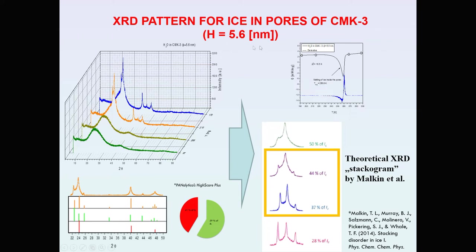Here are diffraction patterns for ice in pores of CMK3 with a pore size of 5.6 nanometers. First, we performed DSC measurements to find the melting temperature in the pore — the heat flow peak indicates the melting temperature. At temperatures lower than the melting point, we observe diffraction peaks typical for a crystal structure. Analysis using the PANalytical HighScore Plus program showed that the spectrum is typical for the theoretical spectrum shown by Malkin for stacking-disordered ice, meaning our ice consists partly of cubic ice and partly of hexagonal ice.